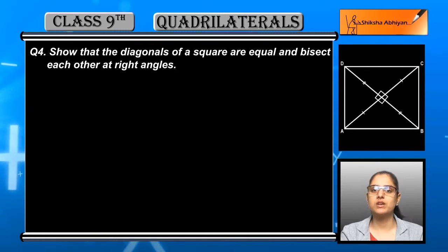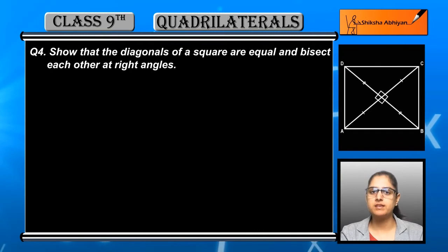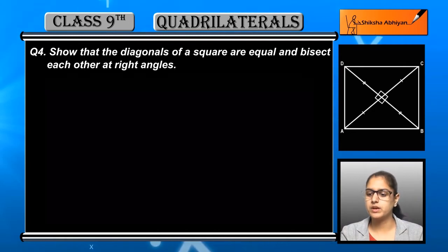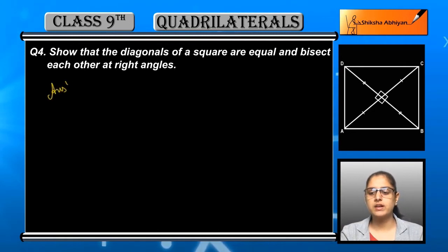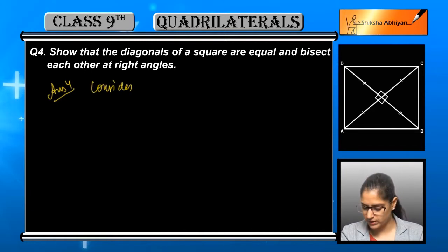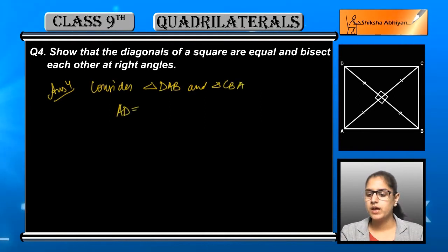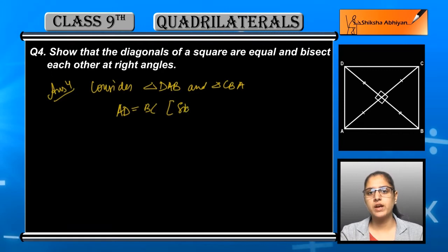If a square is given, we will show that its diagonals are equal, bisect each other, and intersect at 90 degrees. We will consider the triangles DAB and CBA in the given figure, square ABCD. Now, AD is equal to BC because all sides of a square are equal, and AB is common.